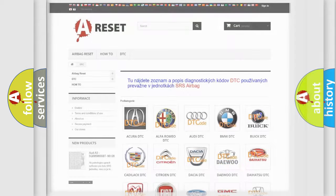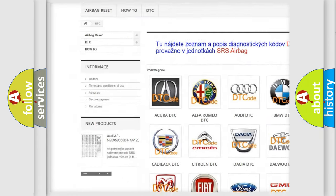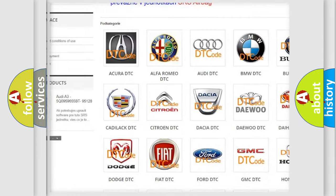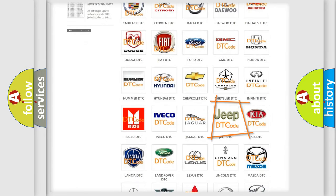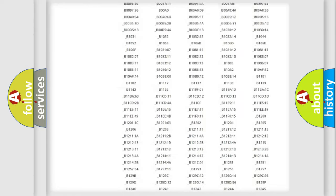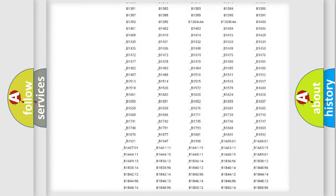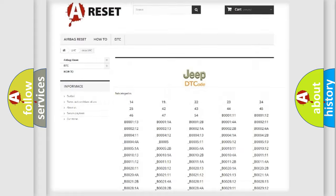Our website airbagreset.sk produces useful videos for you. You do not have to go through the OBD2 protocol anymore to know how to troubleshoot any car breakdown. You will find all the diagnostic codes that can be diagnosed in Jeep vehicles.